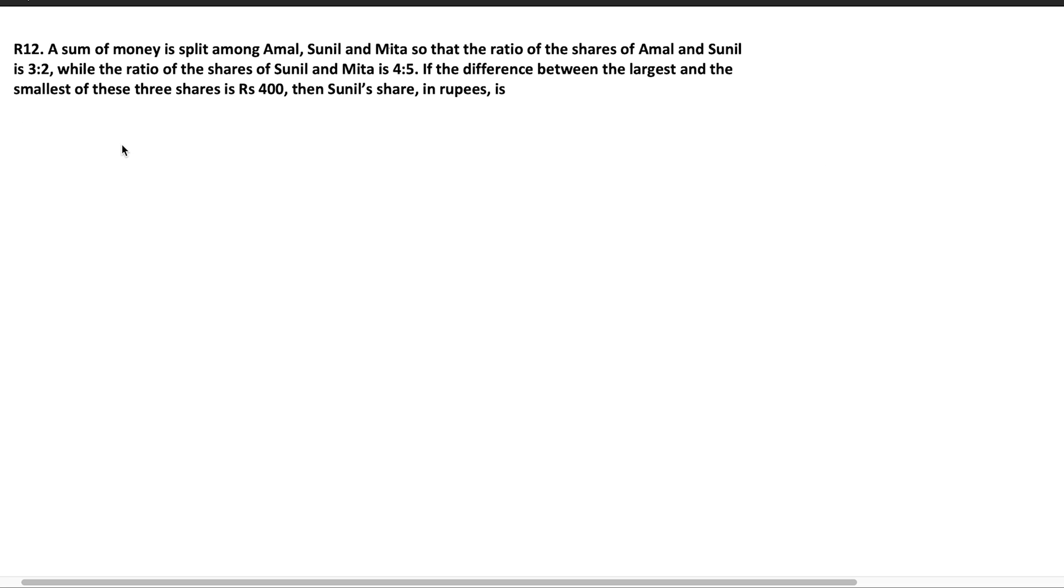So this question is also from IIM CAT. Take some time and try to solve this. A sum of money is split among A, S and M, so that the ratio of shares of A and S is 3 is to 2, while the ratio of shares of S and M is 4 is to 5. If the difference between the largest and the smallest of these shares is 400, then Sunil's share, that's the question.